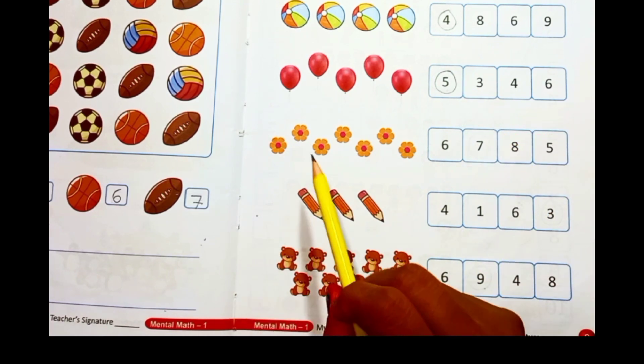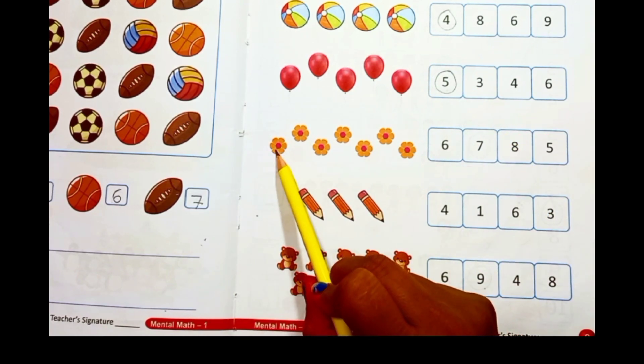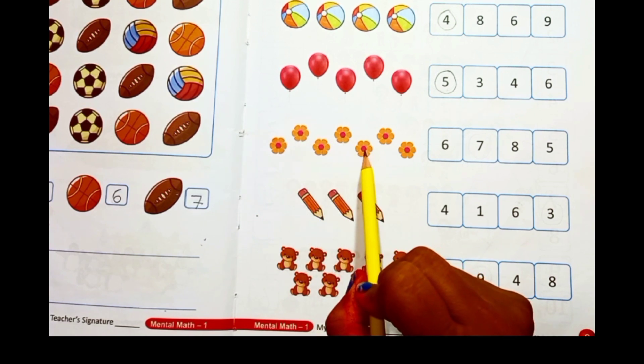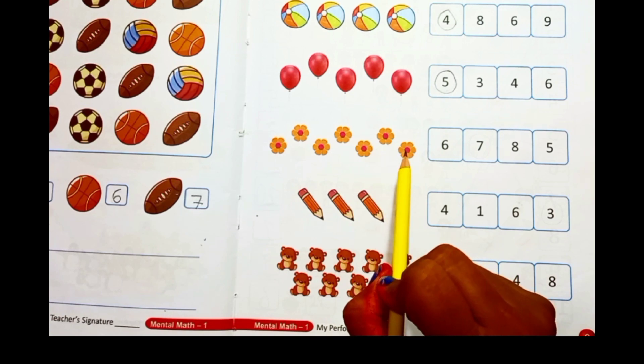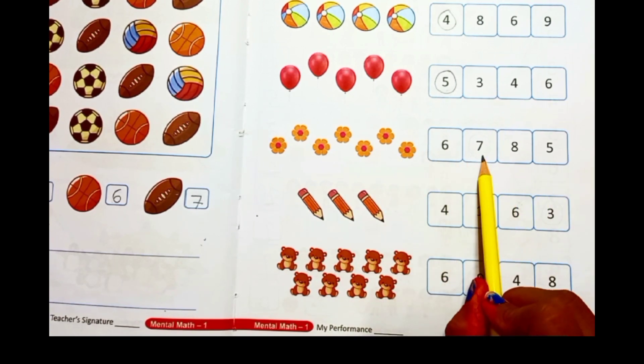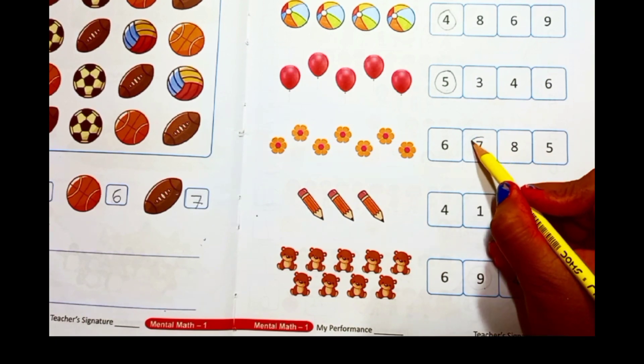Next, 1, 2, 3, 4, 5, 6, 7. Seven flowers. Where is number 7? Yay.